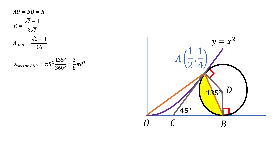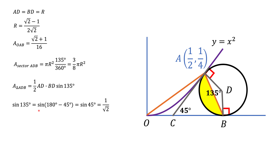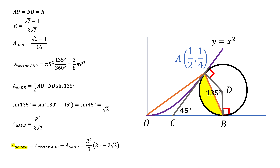Now we calculate the area of triangle ADB, which equals one-half times AD times DB times the sine of the angle between them. AD and BD are both radii equal to R. Sine of 135 degrees equals sine of (180 minus 45) equals sine of 45 degrees, which is 1 over square root of 2. Plugging this in gives us the area of triangle ADB, and the yellow area is then the sector area minus the area of triangle ADB.